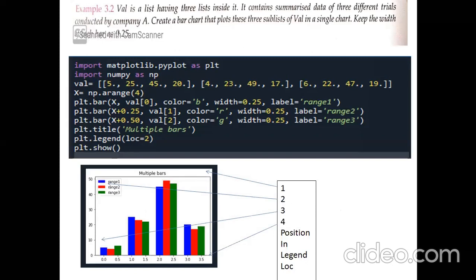We have three list values to plot but the x-axis values are not given. So we use numpy dot arrange to generate the x-axis. The arrange argument is four because each sub-list has four values, so the length of the sequence is four. You can see that x has been plotted and the final range goes up to 3.5, meaning the range is four.